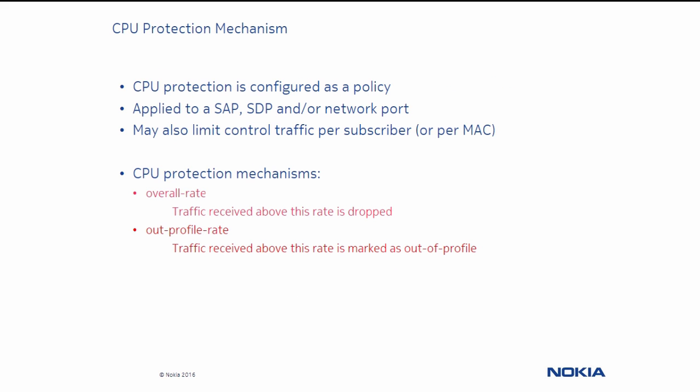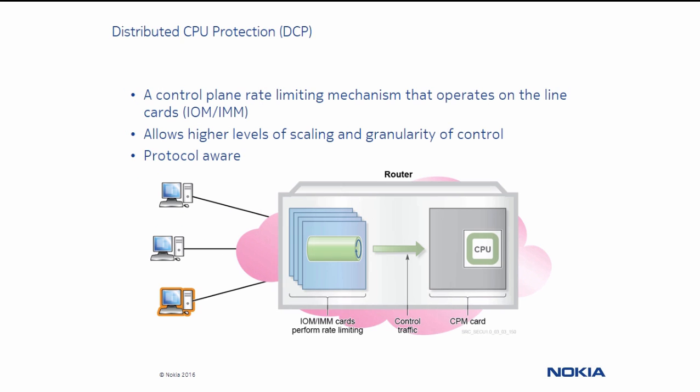Per-subscriber or MAC address rate limiting would be recommended in broadband aggregation networks where a large number of DHCP or PPPoE clients exist. CPU protection is a centralized rate limiting function that operates on the CPM card to limit traffic destined to the CPU. Whereas distributed CPU protection, or DCP, is a rate limiting protection mechanism that operates on the line cards, where both line cards and the CPM card filter control plane traffic.